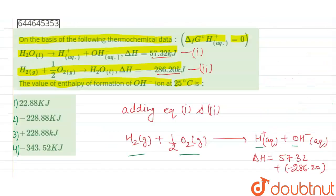So this is the required heat of formation of OH minus ions. Option number two matches with our result. Option number two is correct and all other options are incorrect. I hope you understand. Thank you.